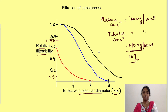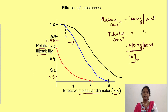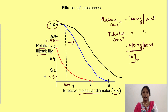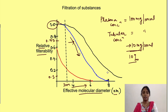For neutral (uncharged) substances, when the diameter is less than 3 nanometers the substance is freely filtered — relative filterability is 1. As size increases from 3 nanometers onward, filterability decreases, and at around 7 to 8 nanometers none of the substance is filtered at all.